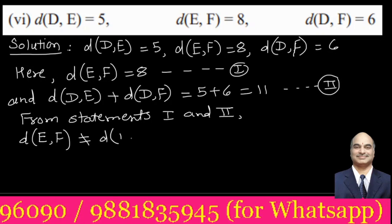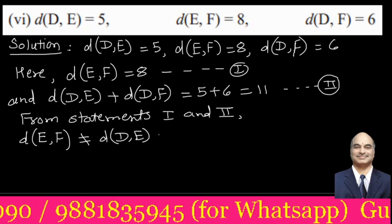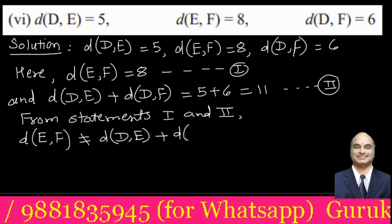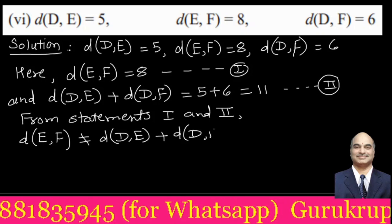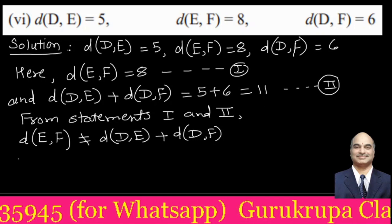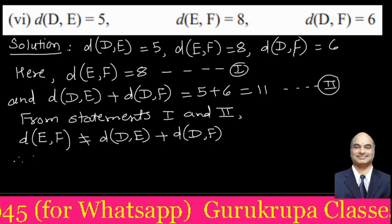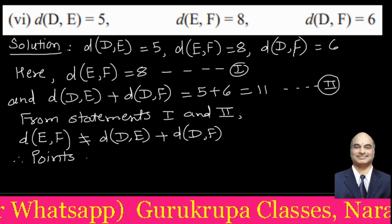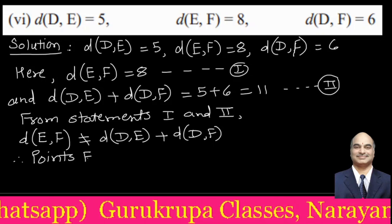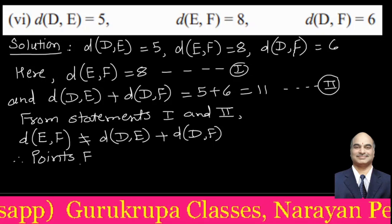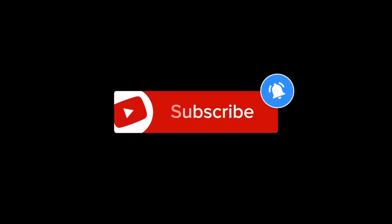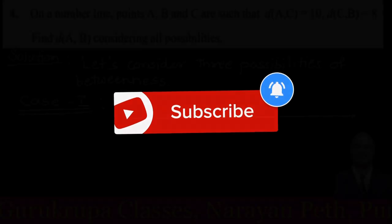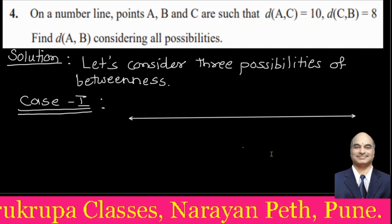Since the greatest distance EF does not equal the sum of DE and DF, therefore points D, E, and F are non-collinear.